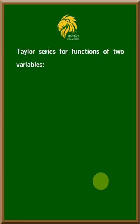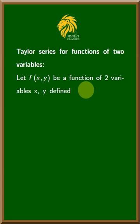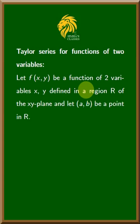Taylor series for functions of two variables. Let f of xy be a function of two variables x, y defined in a region R of the xy plane, and let AB be the point in R.